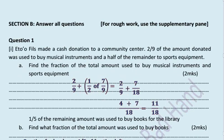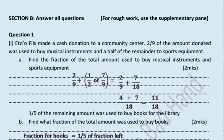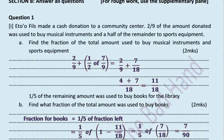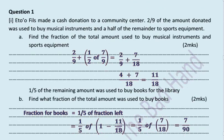A fifth of the remaining amount was used to buy books for the library. Find what fraction of the total amount was used to buy books. So we have to look for 1/5 of the fraction left, and the fraction left is 1 minus 11/18 from part a. That gives us 1/5 of 7/18 which equals 7/90.